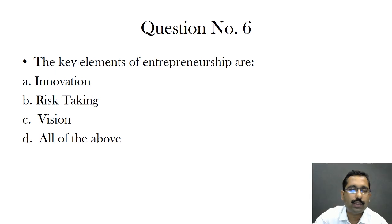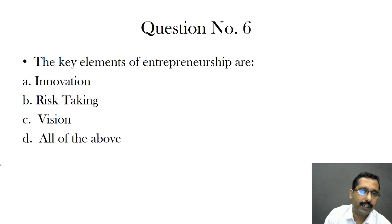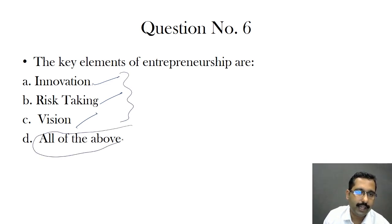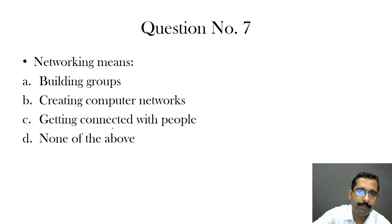Question six: the key elements of entrepreneurship. If you have read the chapter, this comes on the first page itself. The key elements are innovation, risk taking, and vision — all of these are required to become an entrepreneur. So the answer is all of the above.